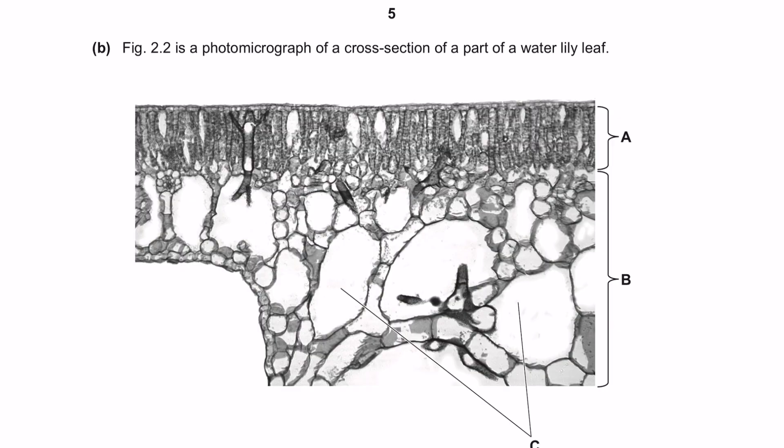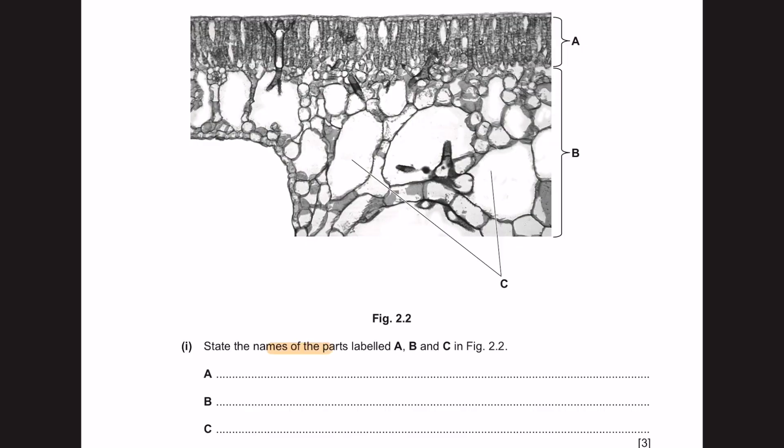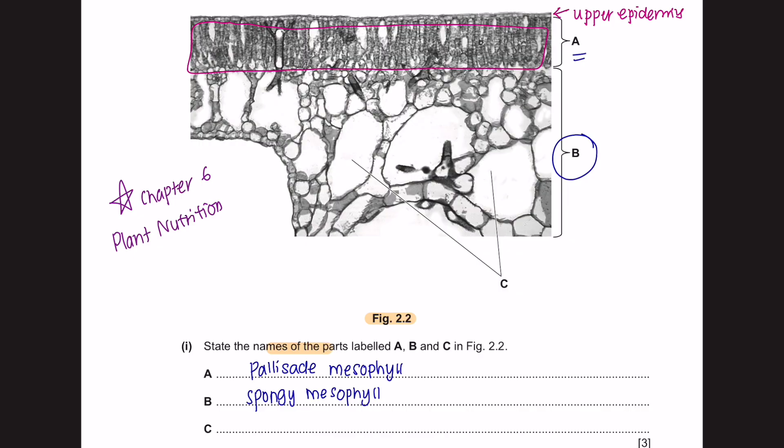Question B. Figure 2.2 is a photomicrograph of a cross-section of a part of water lily leaf. Part 1. State the names of the parts labeled A, B and C in figure 2.2. You will learn about the leaf structure under Chapter 6 of Plant Nutrition. The upper part here is the upper epidermis, followed by a layer of chloroplasts which are stacked together closely, identified as the palisade mesophyll. Part B here is the spongy mesophyll, which is above the lower epidermis. And the empty spaces here are all air space. This is to help the leaf float on the water.